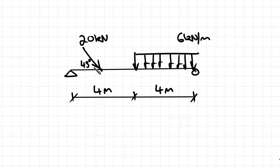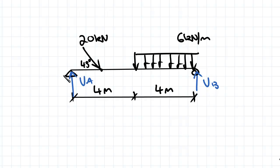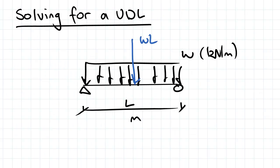On the other half, there is a 20 kilonewtons load acting at 45 degrees at the center of that second half. We draw in the reactions at the supports: a roller gives a vertical reaction VB, and the pin support gives two reactions — a vertical and a horizontal. The first step is to draw out the free body diagram.